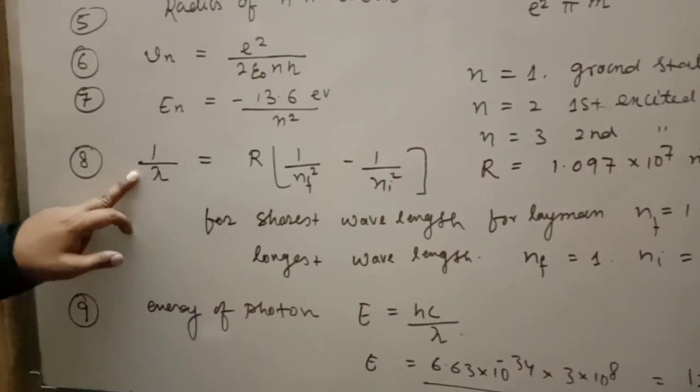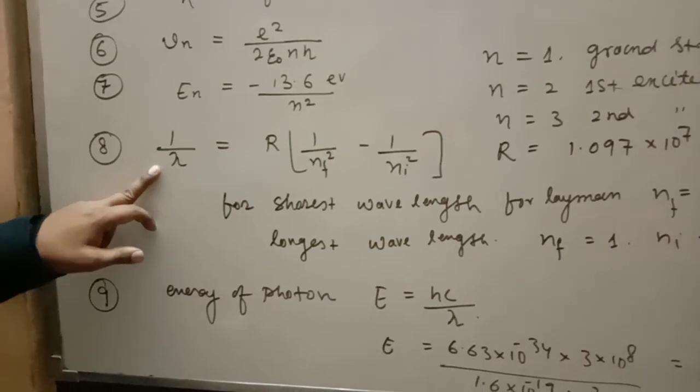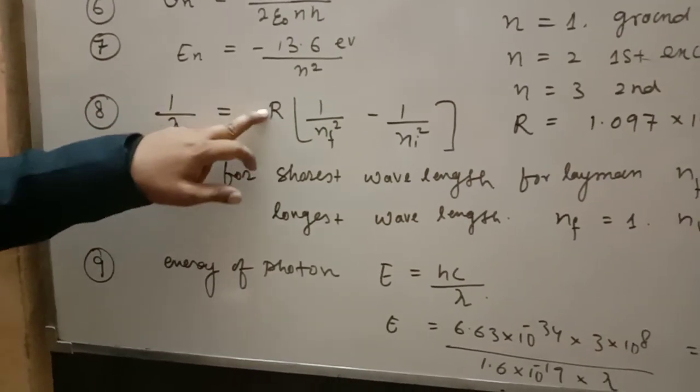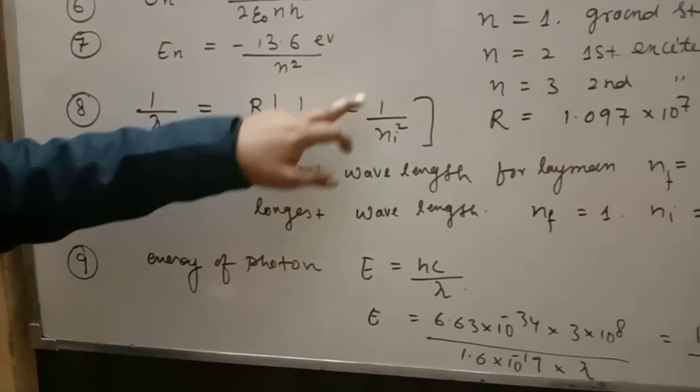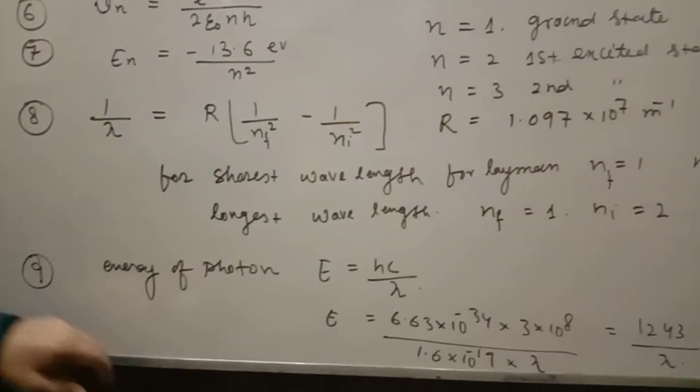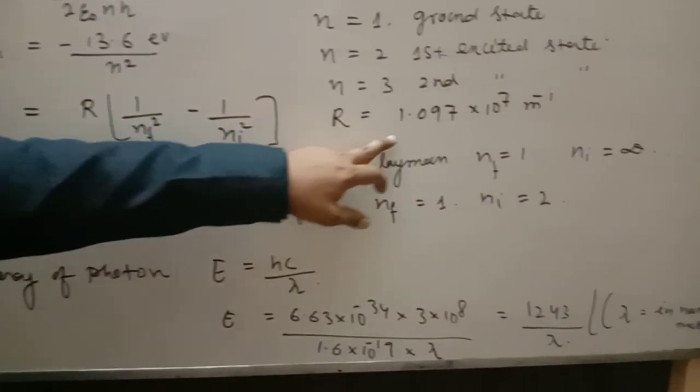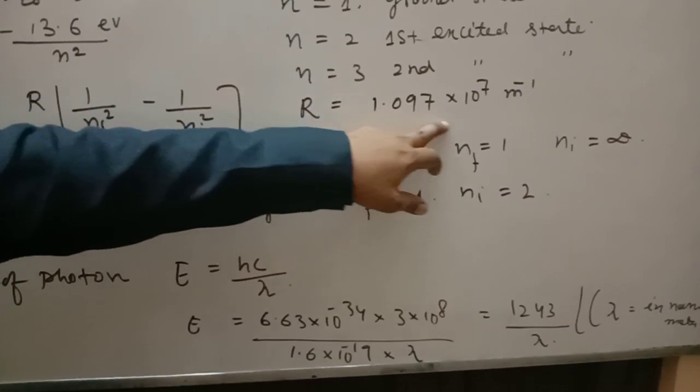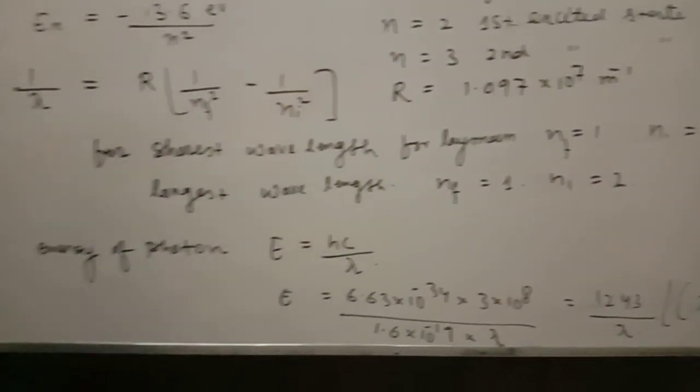Then, this is another important formula. Spectral line formula: 1 by lambda is equal to R times 1 by nf square minus 1 by ni square. Where R is the Rydberg constant, 1.097 into 10 to the power 7, meter to the power minus 1.